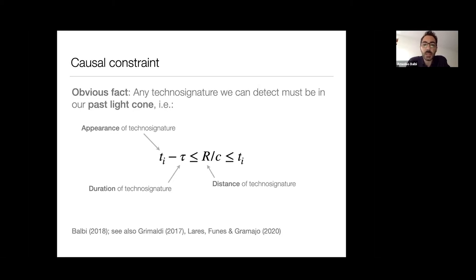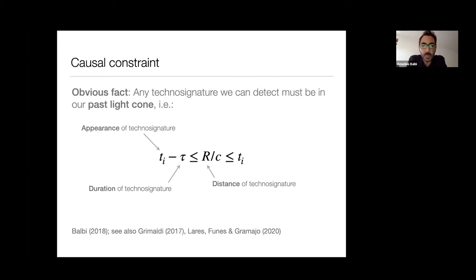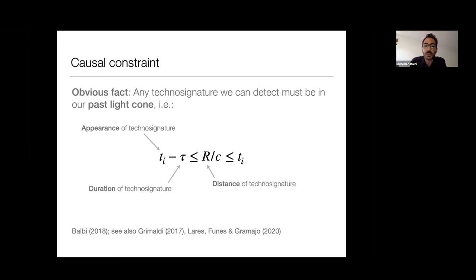It's a causal constraint. There's a very straightforward formula: if you want to be on the past light cone, if you have a distance R for the technosignature and this timescale R over C, all the other timescales that appear in the problem have to meet this causal constraint. Ti is the time when the technosignature appears, and tau is the duration of the technosignature. Unless this is satisfied, you cannot see it.